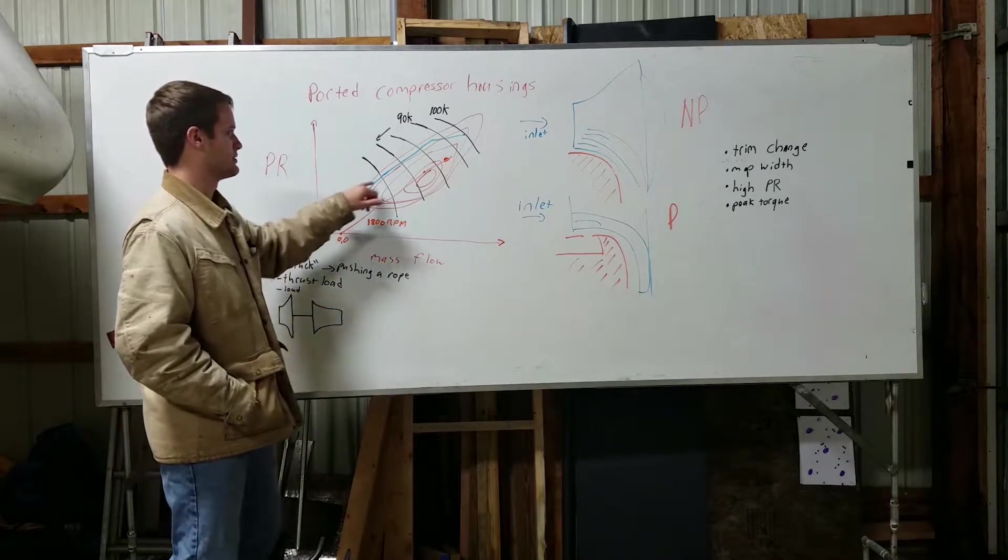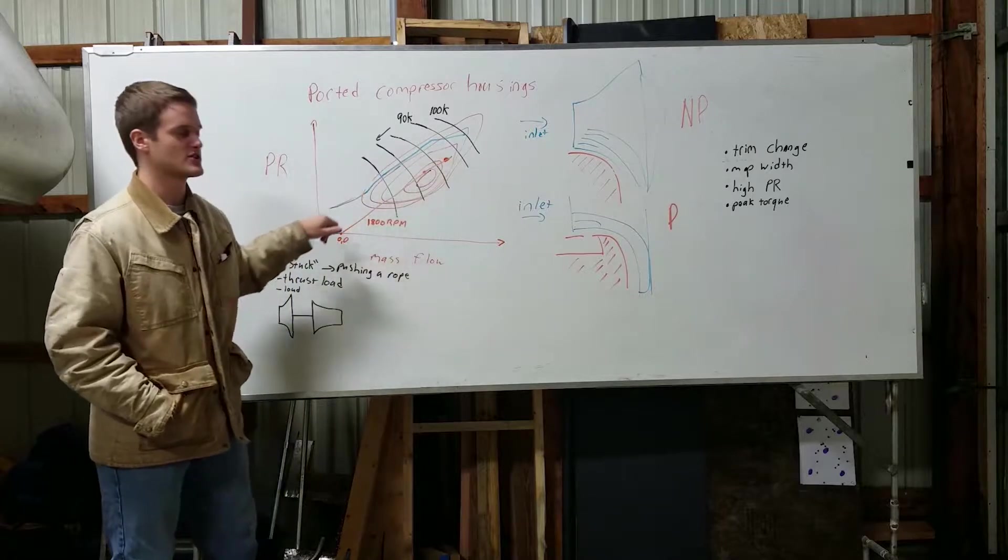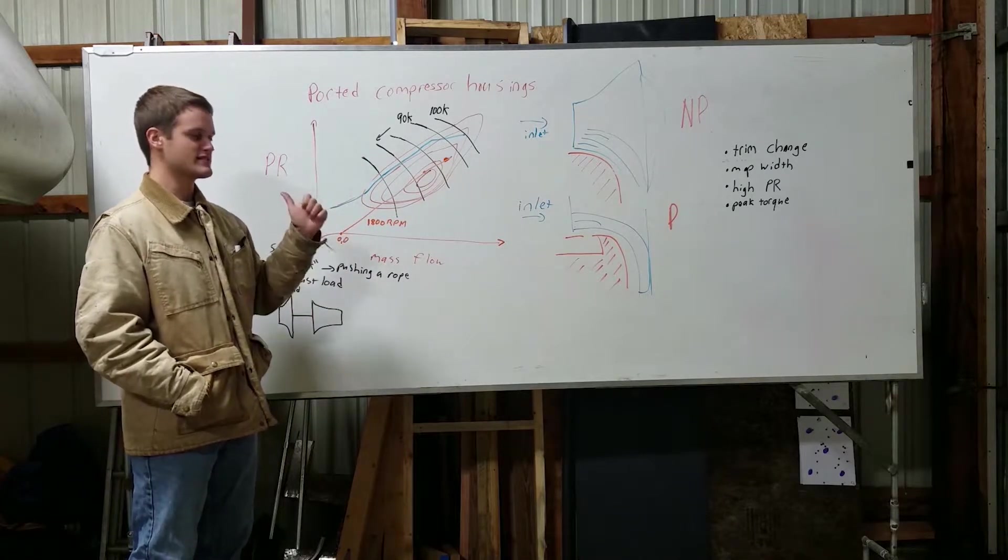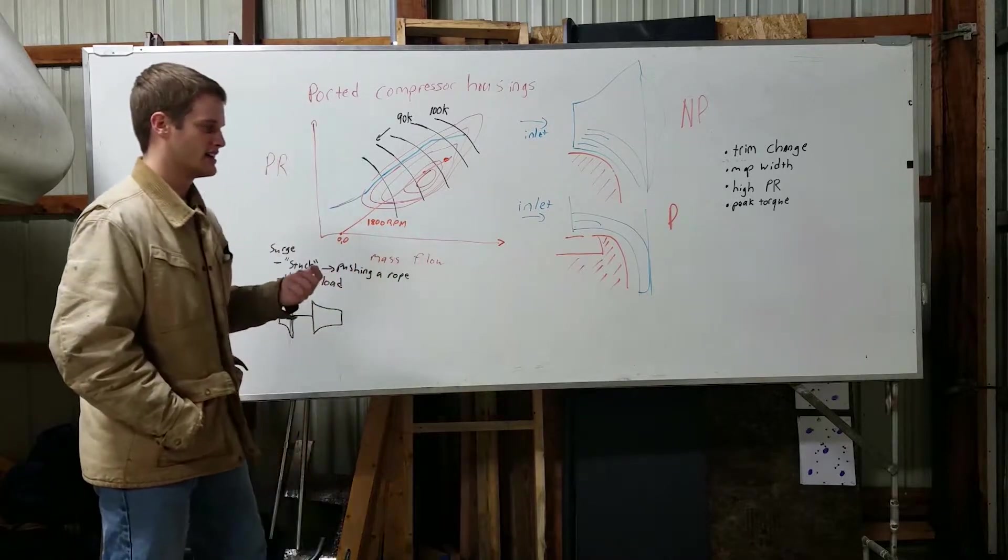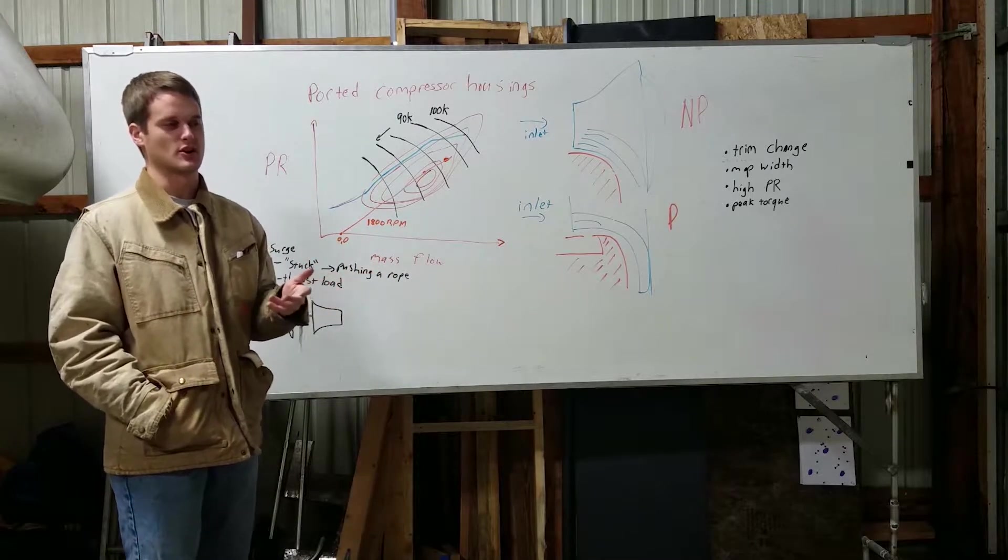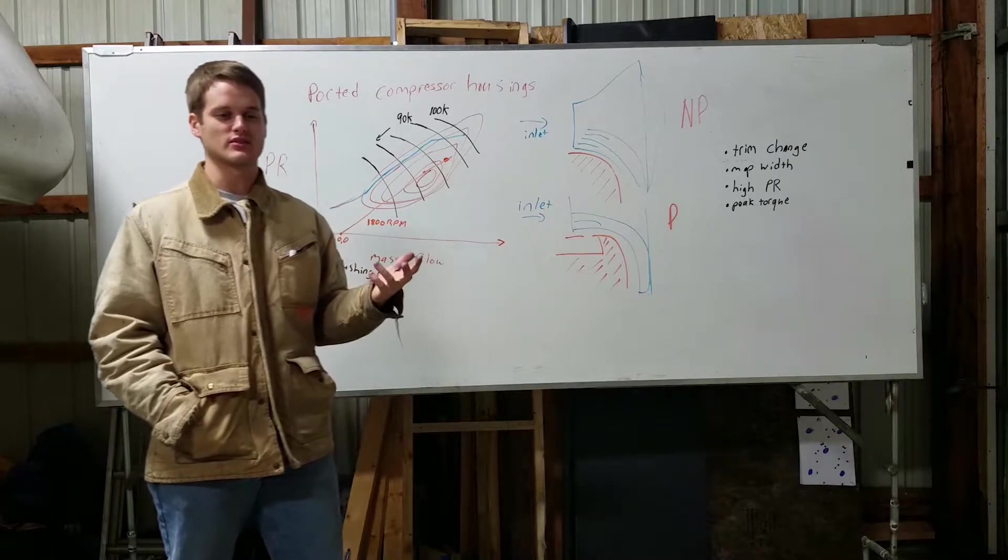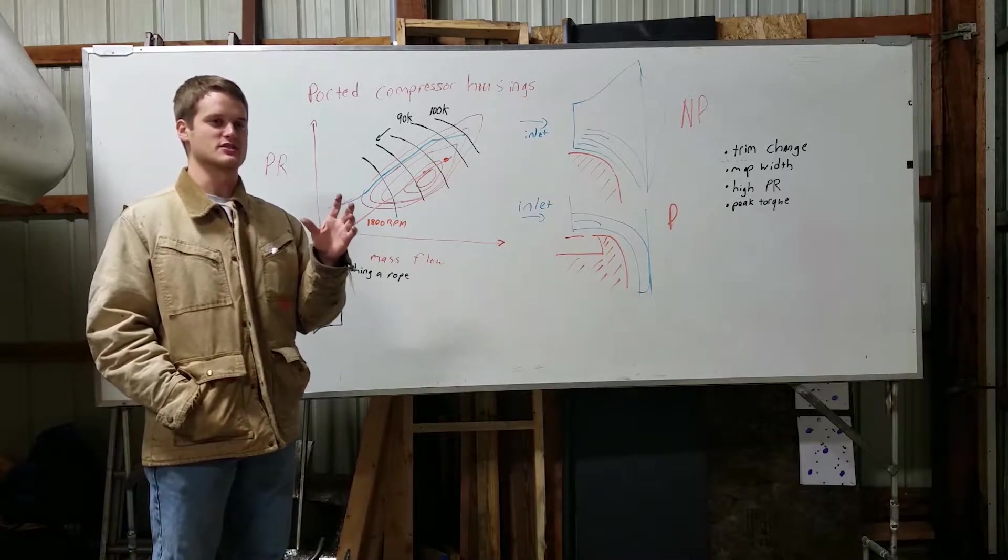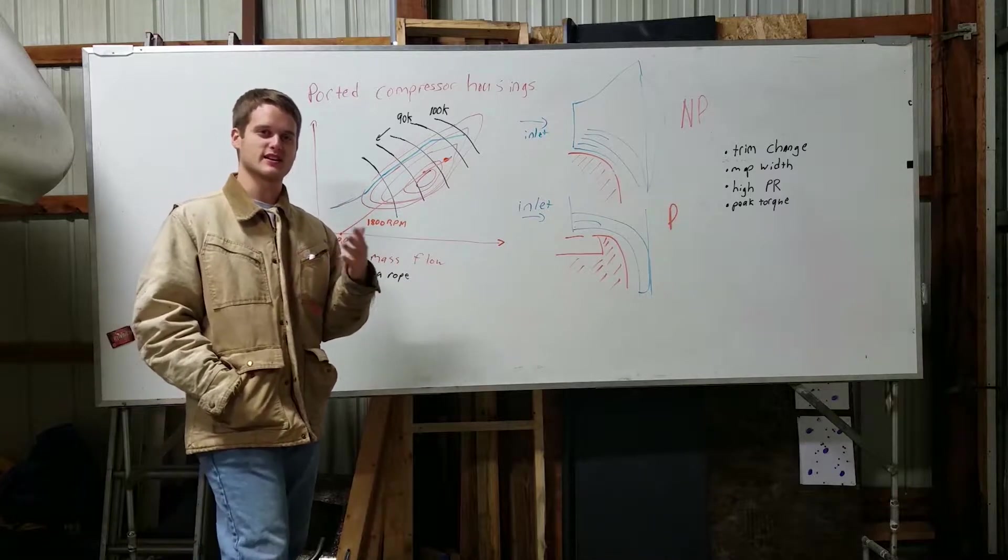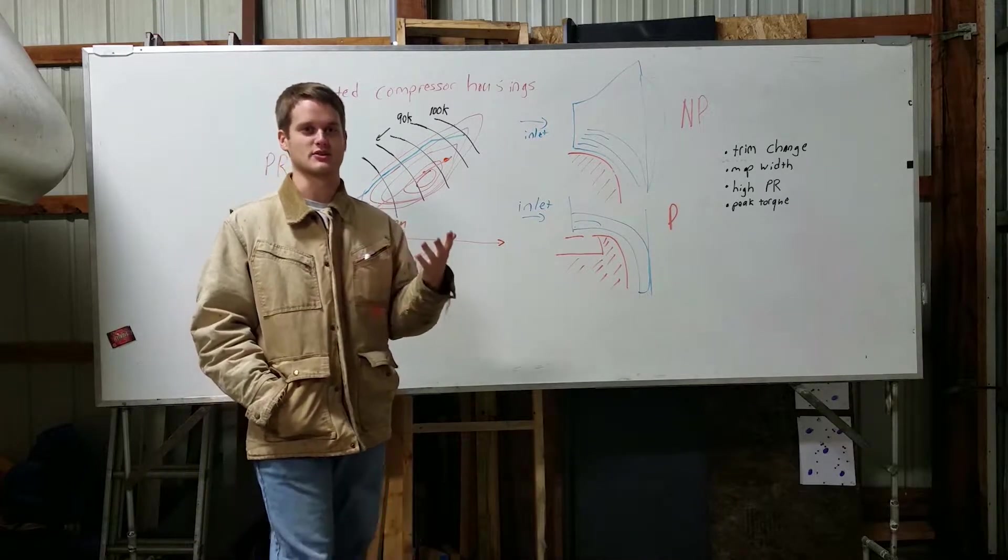So basically, this blue line here represents surge. Anytime you go past that line to the left, you get kind of a whooshing sound. It depends on the turbo, but generally, it's like a whoosh sound. It may sound like your turbo is just like fluttering, like your wastegate's almost fluttering, but that's not actually what's happening.